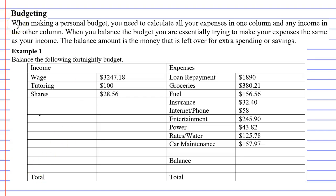The income total is $3,375.74. When I add up the expenses I get $3,090.64. First of all, I want to make sure that my expenses are less than my income — otherwise you're in big trouble.